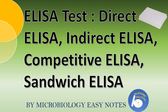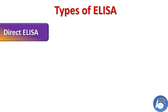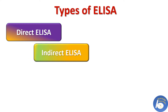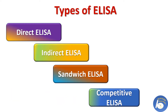Hello everyone, welcome back to my channel Microbiology Easy Notes. If you like this channel, please like, subscribe, comment and share. In this video we will try to understand what are the types of ELISA, their advantages and disadvantages. There are four types of ELISA: first is direct ELISA, second is indirect ELISA, third is sandwich ELISA, and fourth is competitive ELISA.